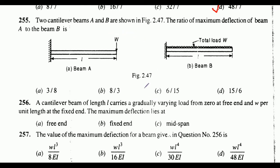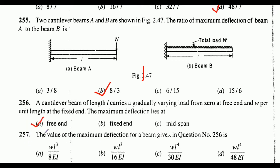Question 255: Two cantilever beams A and B as shown in figure — the ratio of maximum deflection of beam A to beam B. The correct answer is option B: 8/3. Next, a cantilever beam of length l carries a gradually varying load from 0 at the free end and w per unit length at the fixed end — the maximum deflection lies at: free end, fixed end, or mid-span. The correct answer is option A: free end.